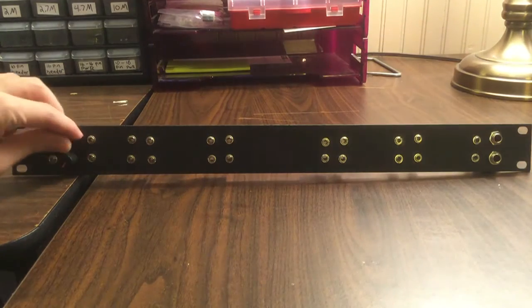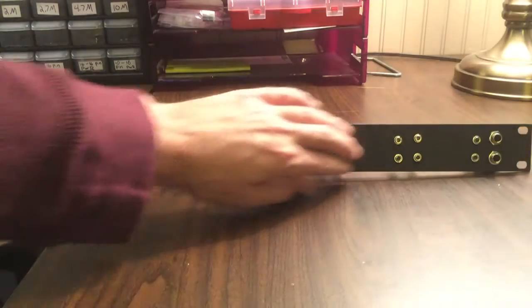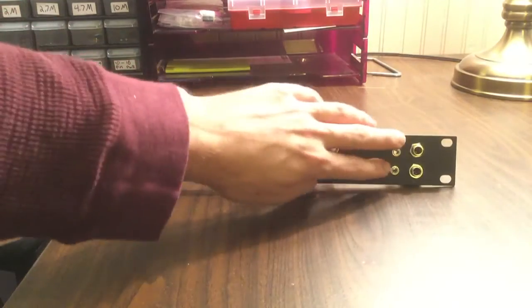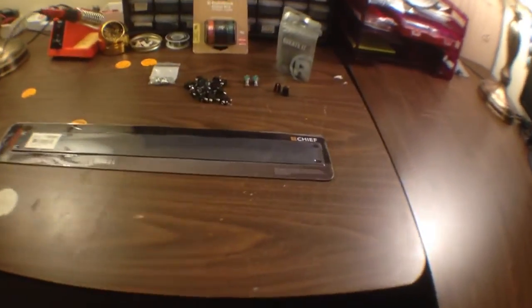On the side here we have two sets of passive attenuators, then we've got four sets of passive multiples, and then on the end here we have another one that has quarter inch cables on two of the four jacks. That way we could use it as a quarter inch to 3.5 millimeter cable adapter.